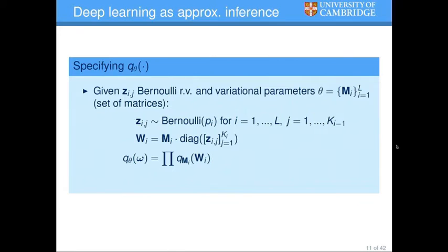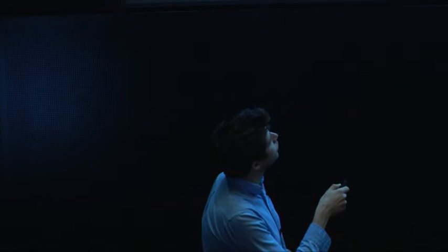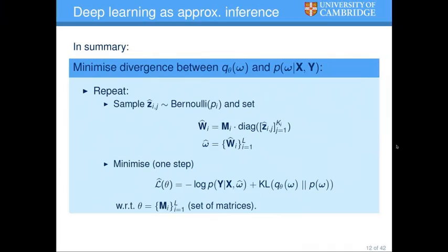Now let's talk about q. Omega is the set of all weight matrices, all linear transformations. We define q to factorize over the W's, and for each W we define q to be a mean matrix M — a variational parameter — times a diagonal where we put Bernoulli random variables on the diagonal. So q is defined by this random matrix structure.